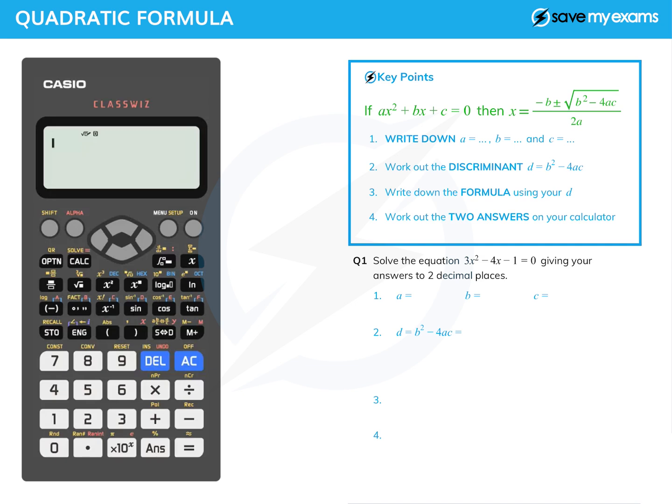First thing I'm going to ask you to do is to write down a, b, and c. That's a very simple thing to do, just read them off your equation. And then we're going to work out the discriminant, which I've called d here, but it's b squared minus 4ac. And then we are going to write down the quadratic formula, but we're going to put the number we've just found, the discriminant, under the square root.